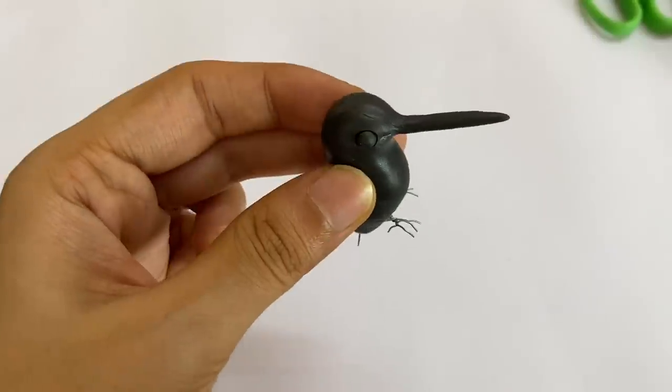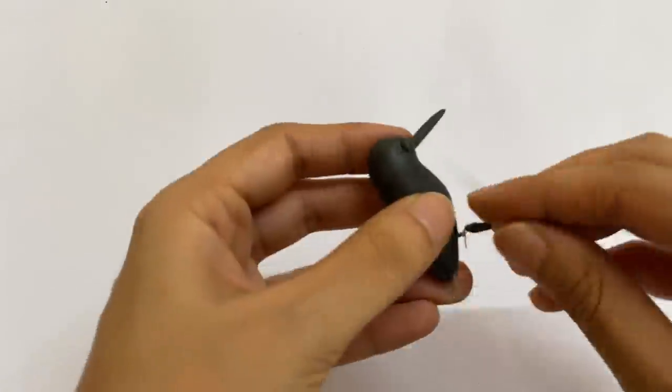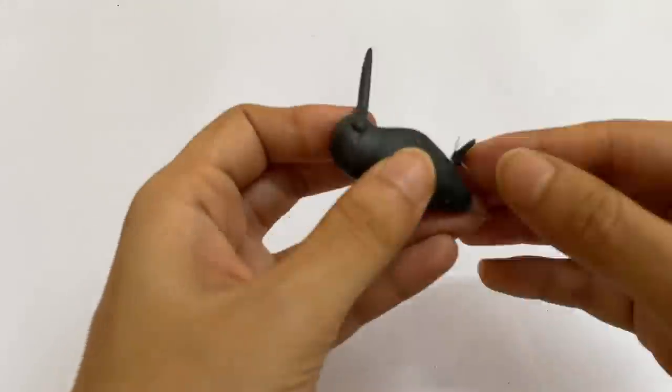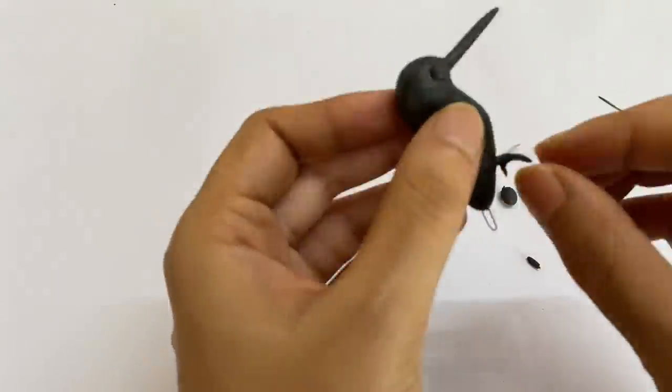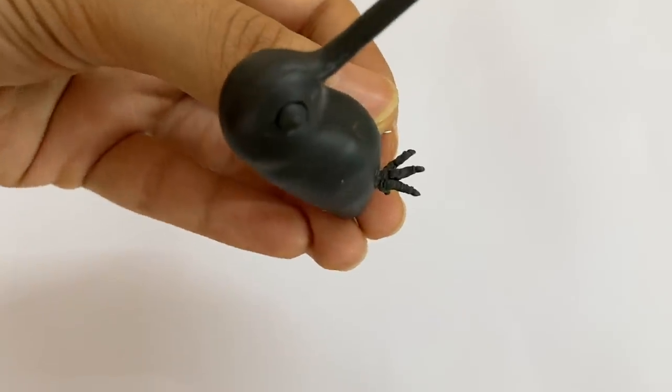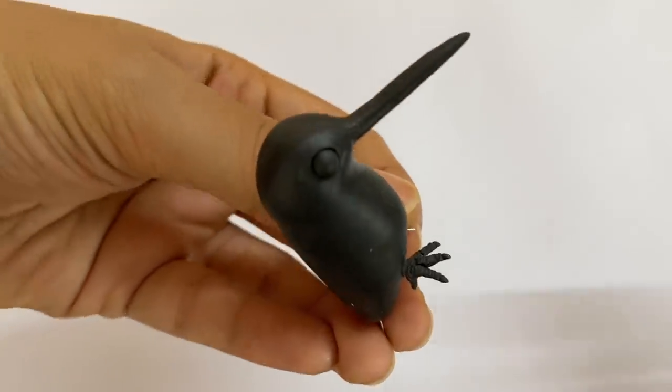Once the talons are ready, cover them up in regular epoxy and give it the right kind of texture using a needle or any such sharp object. This is how the talons will look once covered in epoxy.